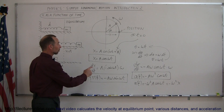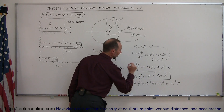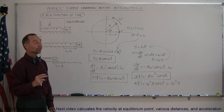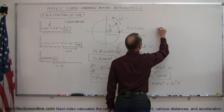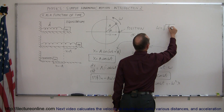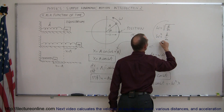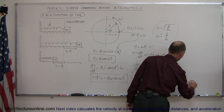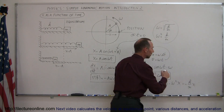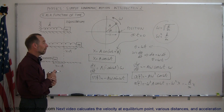We now have three equations: one describing position as a function of time, one for velocity, and one for acceleration. It's also important to note that omega equals the square root of k over m, so omega squared equals k over m. Substituting this in, the acceleration becomes minus k over m times x — exactly the equation we found by setting the spring force equal to F equals ma from Newton's law.